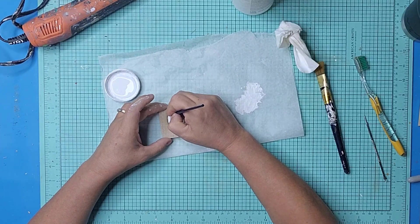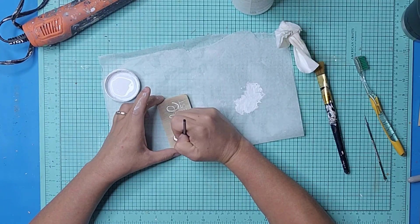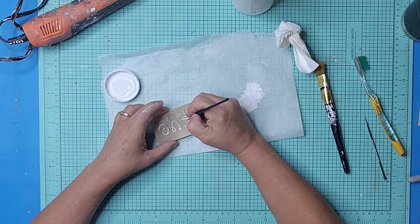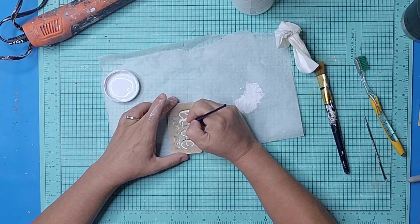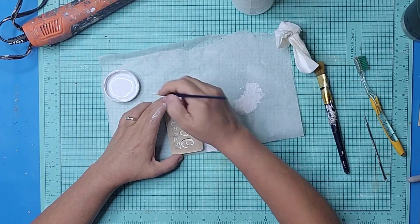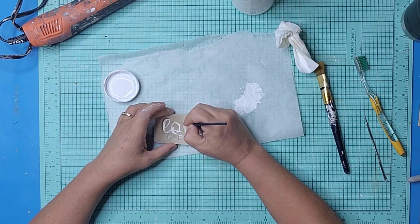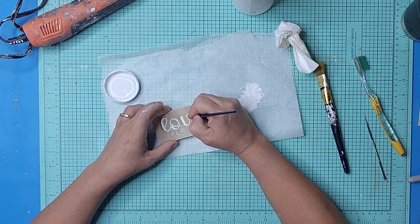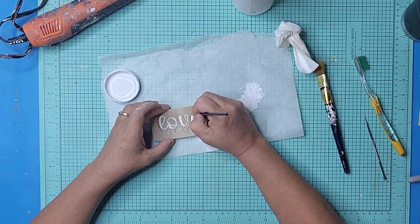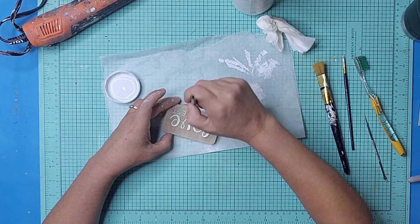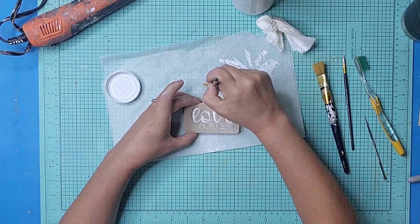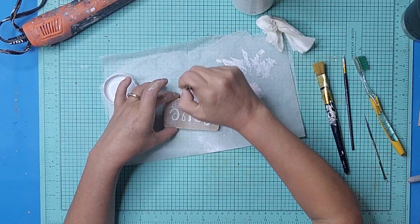I went over the letters on the tag with white chalk paint and a small paint brush. And then distressed the tag with a fan brush and white chalk paint.